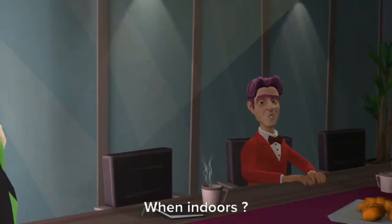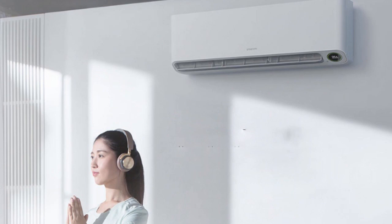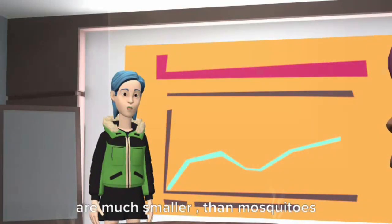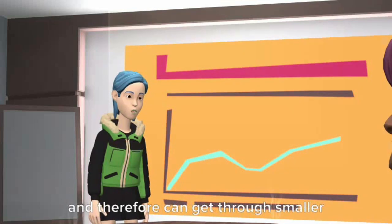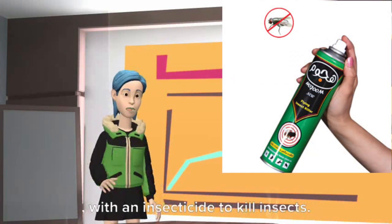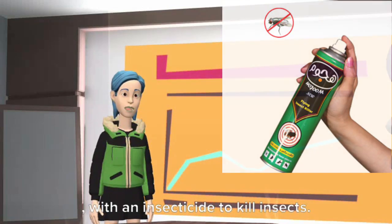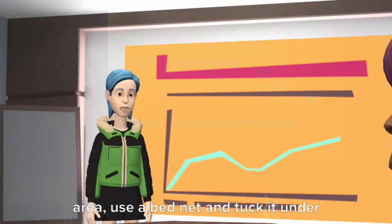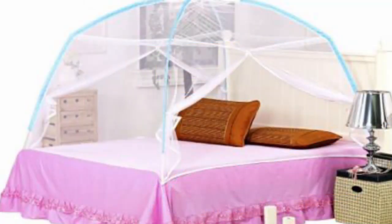When indoors, stay in well-screened or air-conditioned areas. Keep in mind that sand flies are much smaller than mosquitoes and therefore can get through smaller holes. Spray living or sleeping areas with an insecticide to kill insects. If you are not sleeping in an air-conditioned area, use a bed net and tuck it under your mattress.